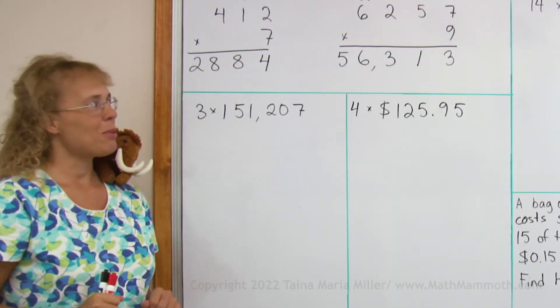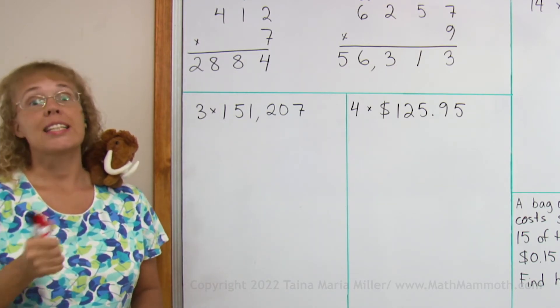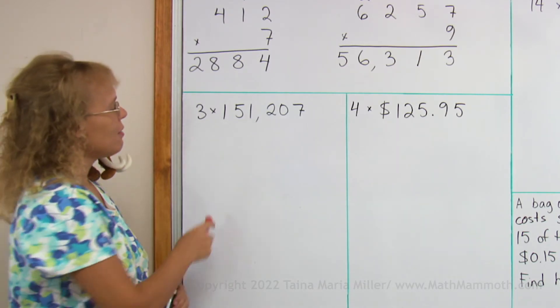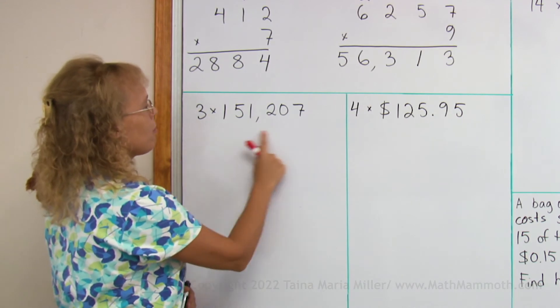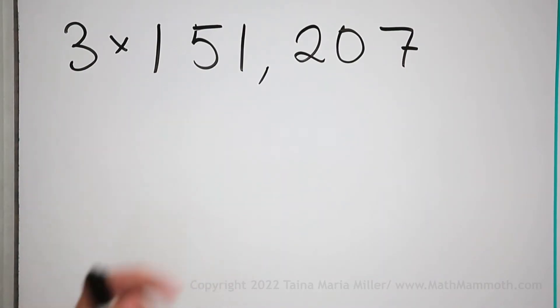Now let's try even a longer number. But before we do, let's estimate. If I want to estimate the answer to this multiplication, I would round this number. I would round it in such a way that I can still multiply mentally.